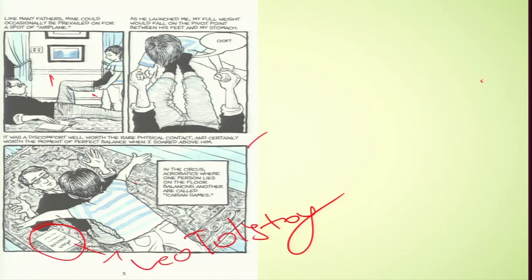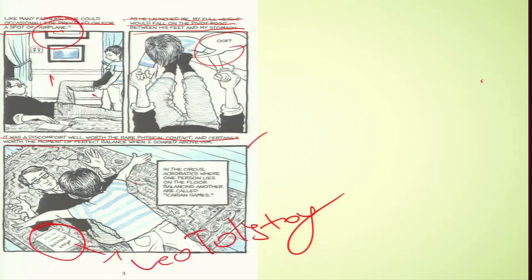Let me read it for you: 'Like many fathers, mine could occasionally be prevailed on for a spot of airplane. As he launched me, my full weight would fall on the pivot point between the feet and my stomach. Oof! It was a discomfort well worth the rare physical contact, and certainly worth the moment of perfect balance when I soared above him. In the circus, acrobatics where one person lies on the floor balancing another are called Icarian games.'